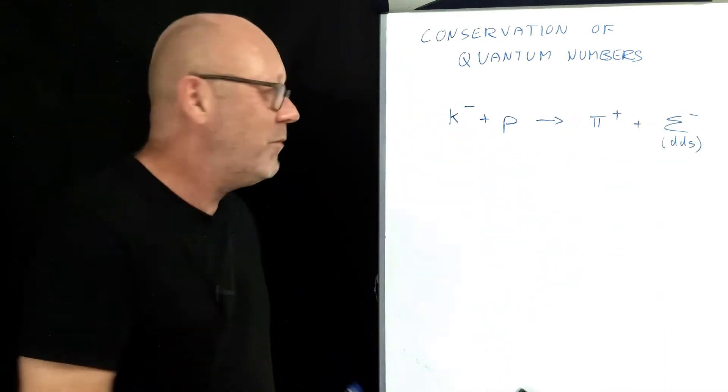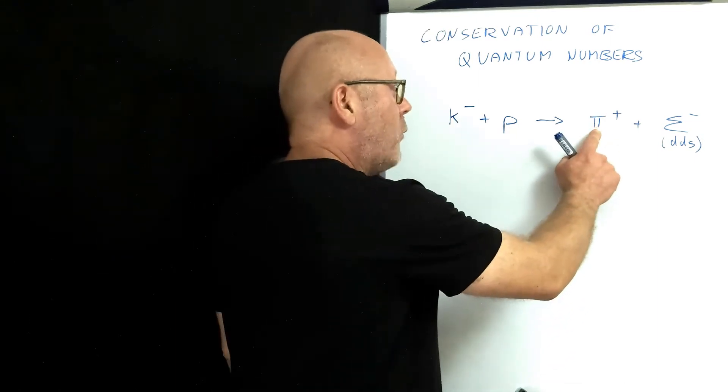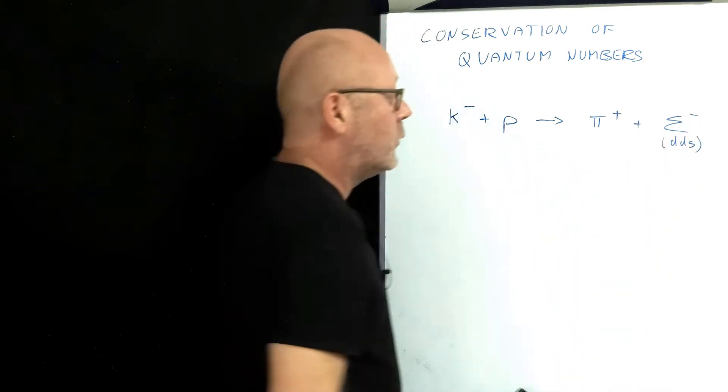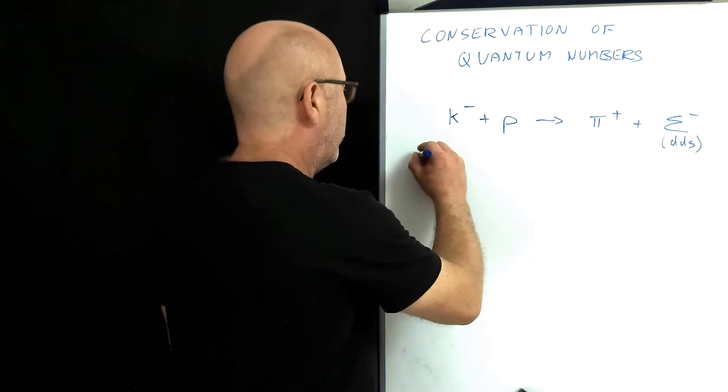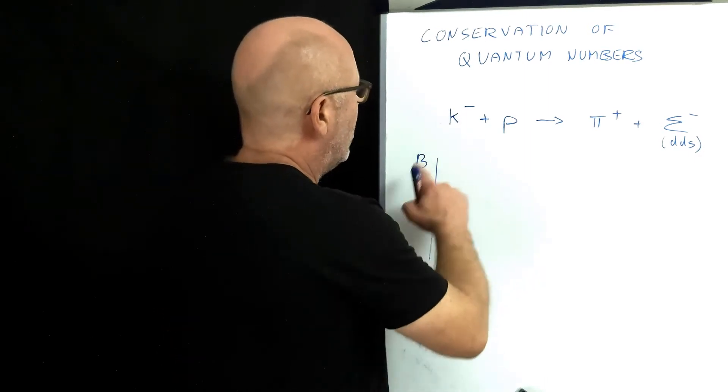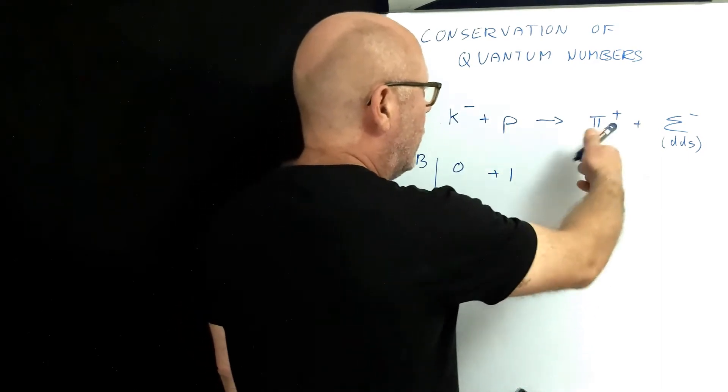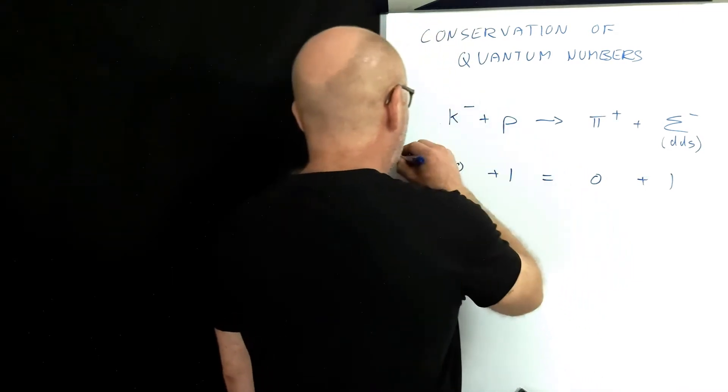In this reaction, we have a negative kaon plus a proton that transforms into a positive pion plus a sigma minus, which is a baryon. So let's start. Baryon number. This is not a baryon. The proton is a baryon. This is not a baryon. That's a baryon. So we got one equals one. Check!